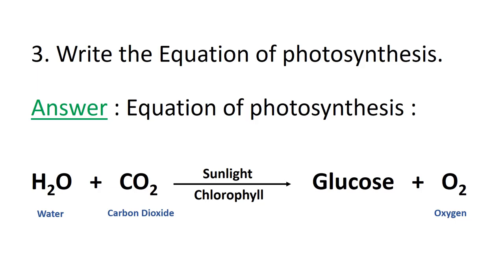For the process of photosynthesis, plants require water, that is H2O. Carbon dioxide is represented as CO2. In the presence of sunlight and chlorophyll, they make the product glucose and liberate oxygen gas, which is represented as O2.